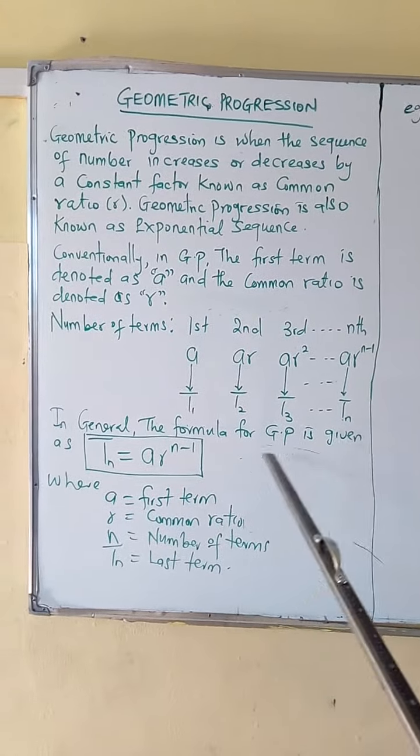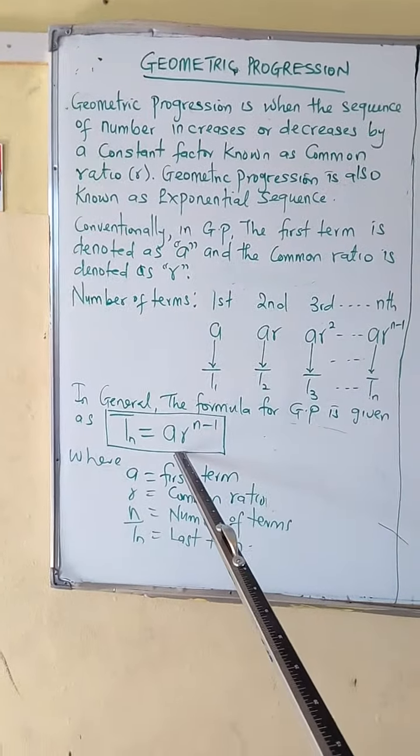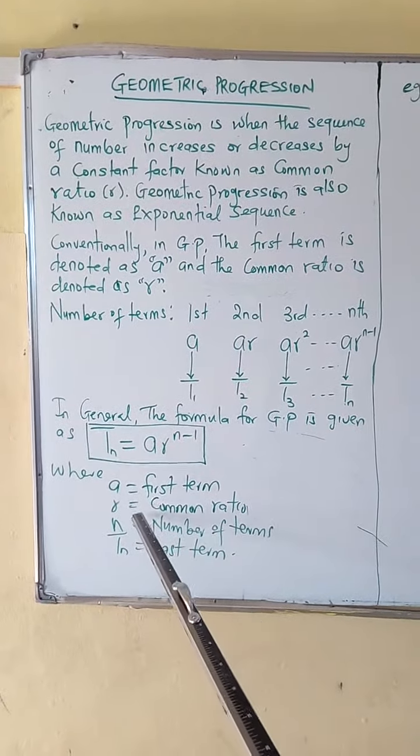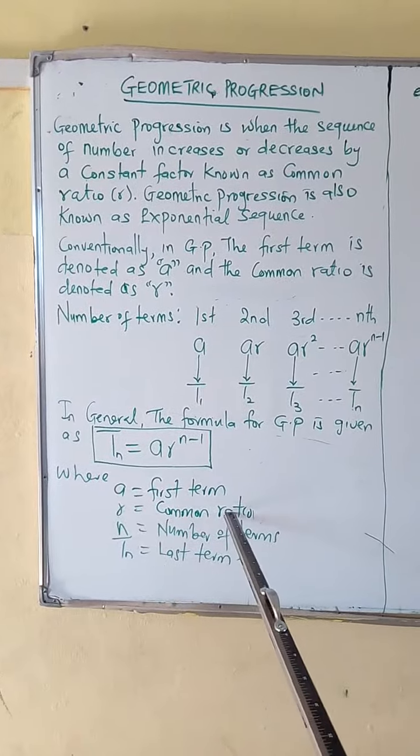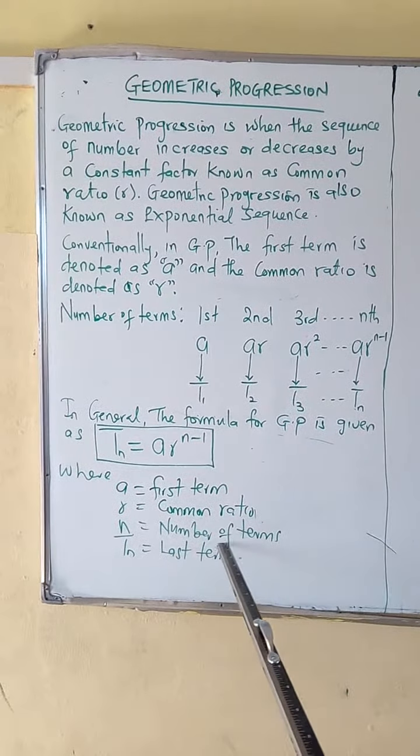In general, the formula for GP is given by this, where A is the first term, R is the common ratio, n is the number of terms, and Tn is the last term.